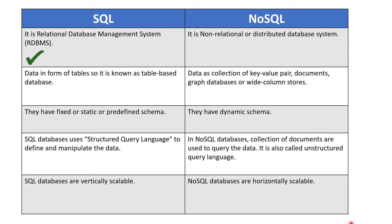The second difference is that in SQL databases, data is stored in the form of tables — so they are table-based. In NoSQL, we have collections instead of tables, and data is stored in key-value pairs inside those collections.